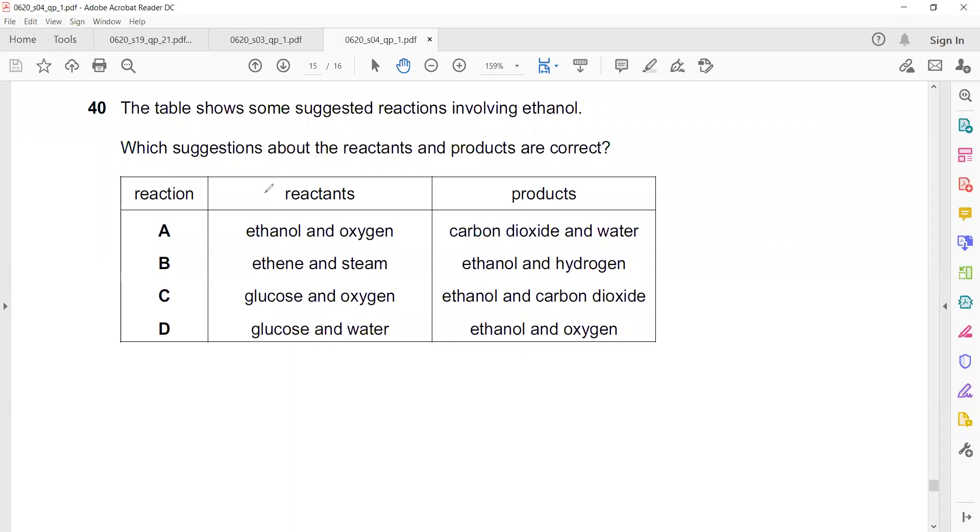Look, the correct answer: ethanol plus oxygen gives carbon dioxide and water. Ethene plus steam, it should only be ethanol, not hydrogen. That's why it cannot be B. Glucose plus oxygen produces carbon dioxide and water. And glucose plus water, it is not resulting in that. It should be in the presence of yeast, so it will produce ethanol and carbon dioxide. That's why A is the right answer.